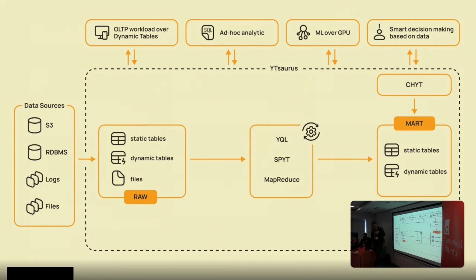Here's an example of how people use Waitisaurus as a large platform. If you have source data, you can copy it — files to files, tables to tables, documents to documents — and store it in raw format. Then use tools like YQL, Spyt, and MapReduce to transform the data and prepare data marts, which can be used for visualization with BI tools like Tableau via ClickHouse with JDBC/ODBC interfaces. For OLTP workloads, use dynamic tables to build applications like an e-shop. If you need machine learning, connect GPUs.